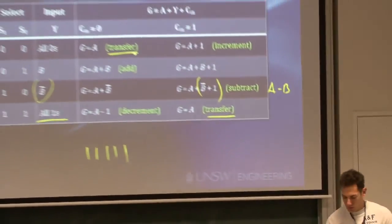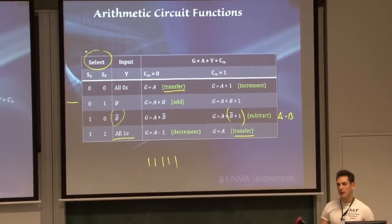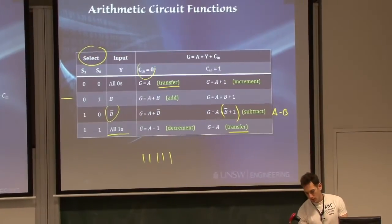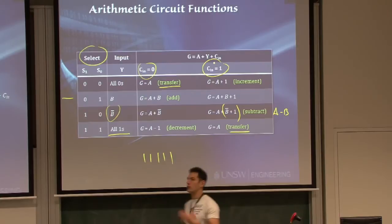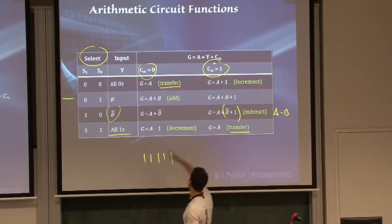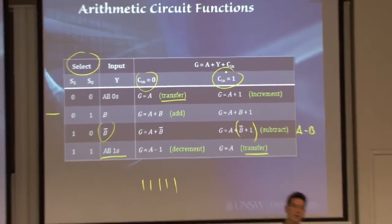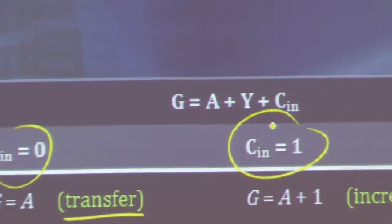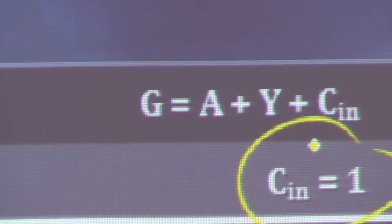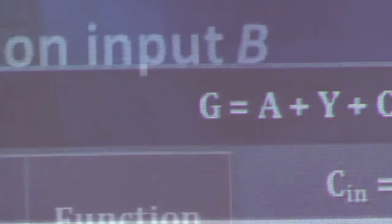And this is what I said. Even if we have two select lines, using C in, the carry-in, being either 0 or 1, will essentially give us double the amount of operations and we will get 8 different operations from this circuit. So this is the idea behind this. How do we go about designing it?